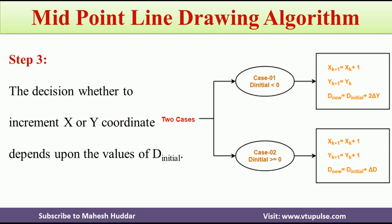In case number two, XK plus one is equivalent to YK plus one, D new is equivalent to D initial plus DELTA D. So these are the three equations used to calculate the new point XK plus one, YK plus one as well as the new decision variable.